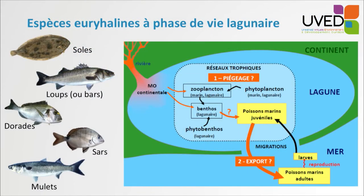Here we have several examples of fishes which, in France, use lagoons when they are juveniles because they can live in salty water during this phase, and year after year they can be found in huge quantities in littoral lagoons.